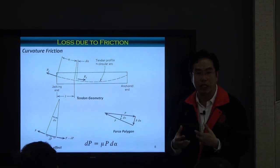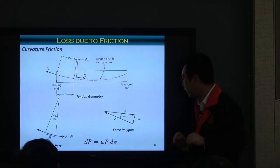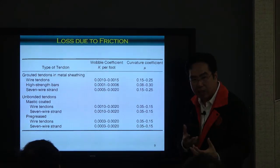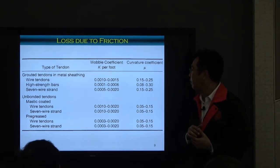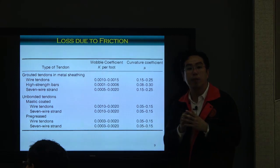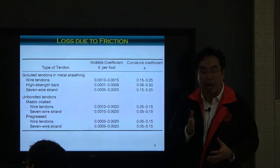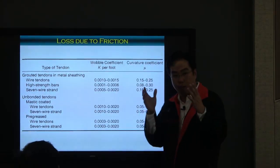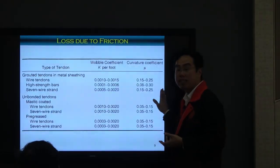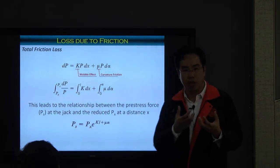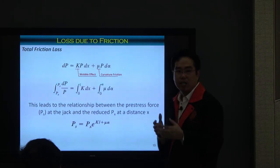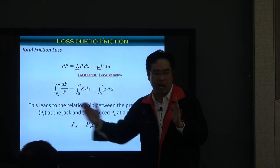After making basic assumptions to simplify the calculation, you get the friction loss equation. Normally in design, the friction coefficient — either wobble friction coefficient K or curvature coefficient μ — is given by the manufacturers, and you select the appropriate value. Once you know K and μ, you can calculate the loss of pre-stress due to friction at any location along the span. By integrating the loss from the checking point along the span, you get an exponential equation: the pre-stressing force varies as an exponential function if K and μ are constant.